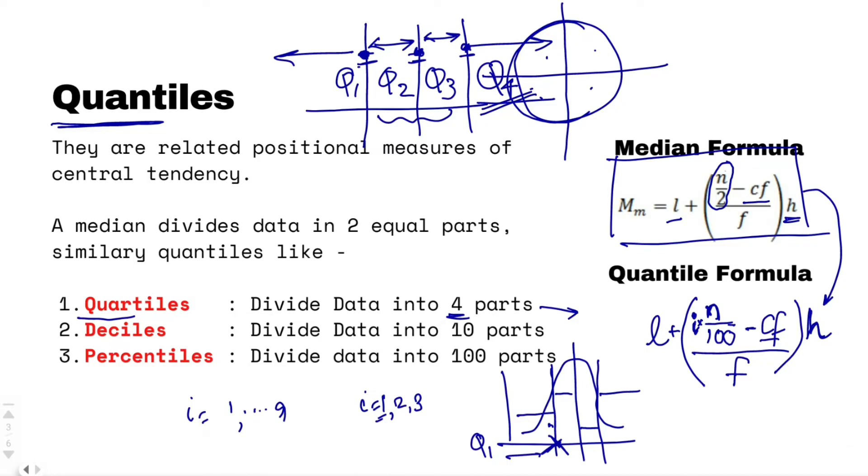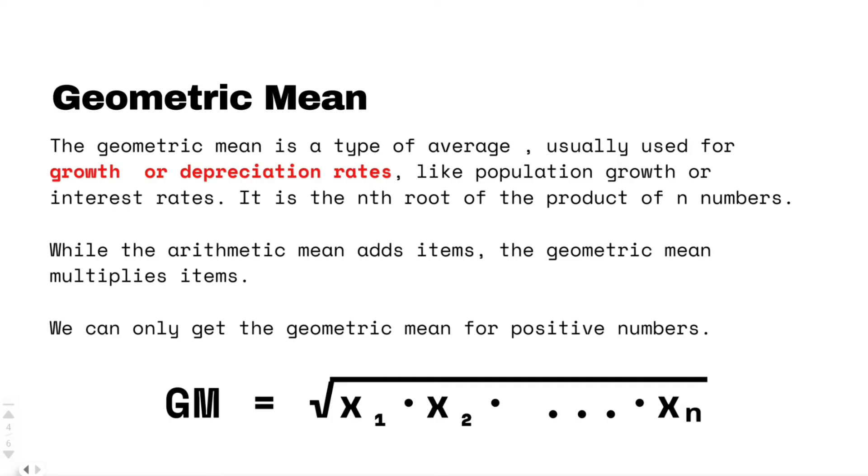I hope you understood the concept of quantiles now. Next, we will talk about geometric mean. Geometric means are also like average only but this average is used for exponential increases or exponential decreases. Like for example, population growth or the population growth rate of bacteria, they grow exponentially. At any given point of time, what is the average rate of growth of that particular population or an interest rate, rather than finding out the simple average mean, we go for the geometric mean.